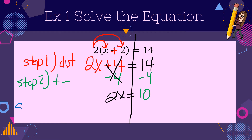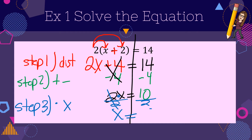Step 3: undo any multiplication or division. So instead of times 2, we're going to divide by 2. The x falls down — what I do to one side, I do to the other. If you're watching this later and need help on these last two steps, you want to see a previous video — look at the solve two-step equations video.